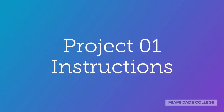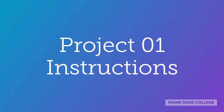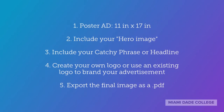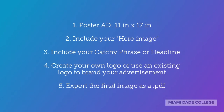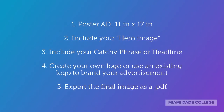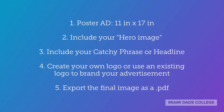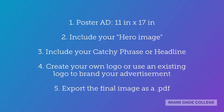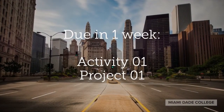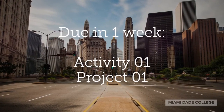Project 1 will be based off the results of your activity prompt. Imagine a world without cars and produce an advertisement that reflects your product or service that would thrive in this market. This project can be completed in five easy steps. First, create your poster at 11 inches by 17 inches. Then, include your hero image. Next, include your catchy phrase or headline. Then, create your own logo or use an existing logo to sign off your advertisement. Finally, export the final image as a PDF. You have one week to complete Activity 1 and Project 1. I'm so excited to see what you guys are going to come up with.